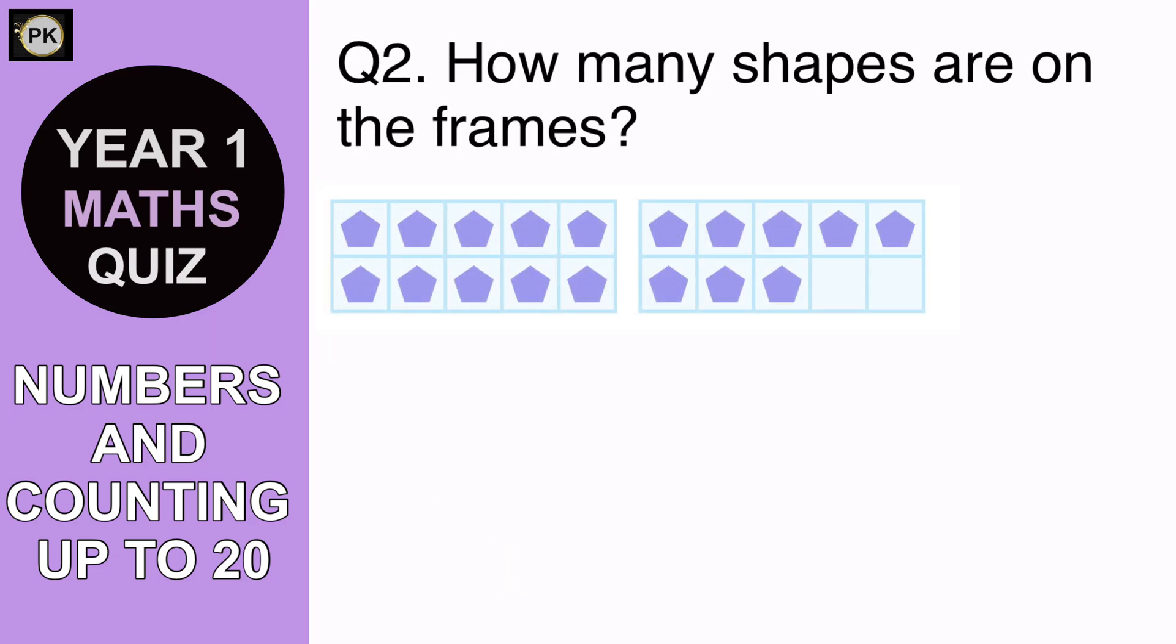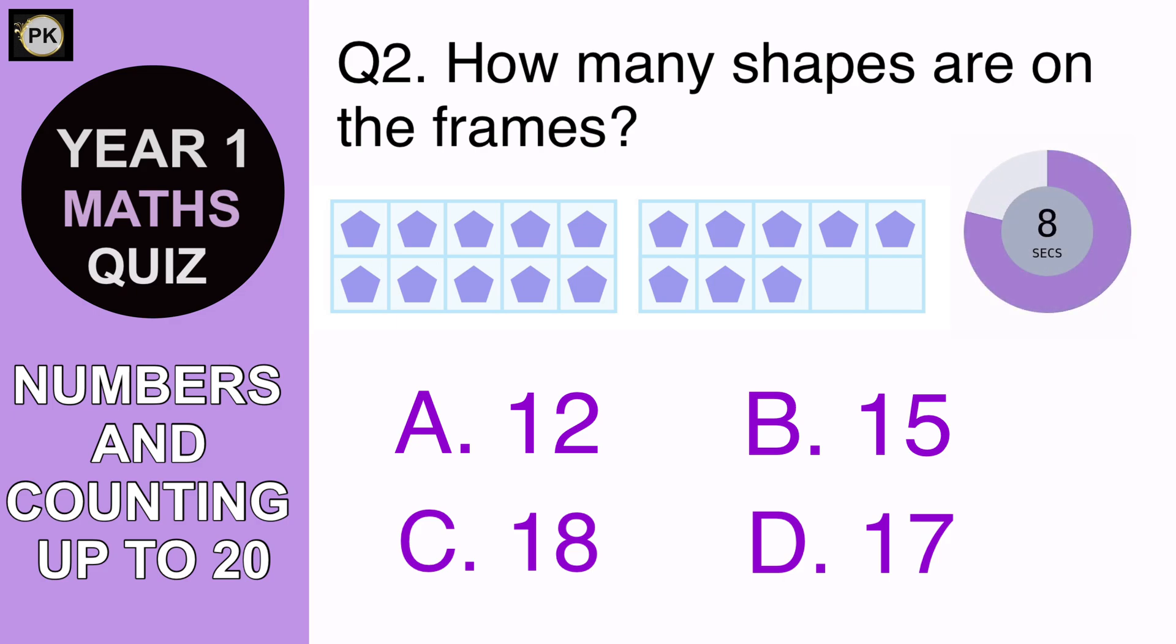How many shapes are on the frames? A. 12, B. 15, C. 18 or D. 17? And the answer is C. 18.